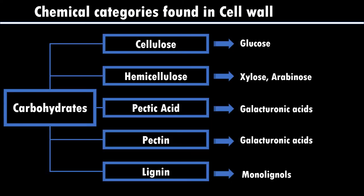When we analyze the chemical categories found in the cell wall, we can observe different kinds of chemicals. Among them, carbohydrates are significant. Cellulose is seen, which is made up of glucose. Hemicellulose is seen, which is made up of galacturonic acids. Pectin also contains galacturonic acid.